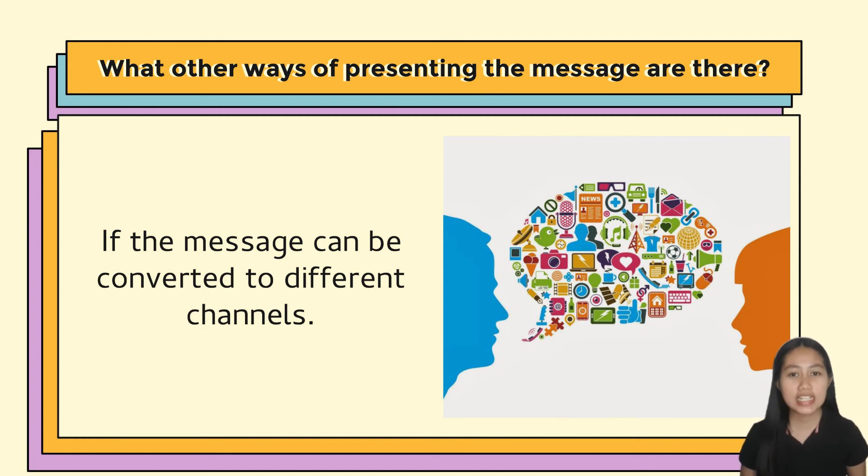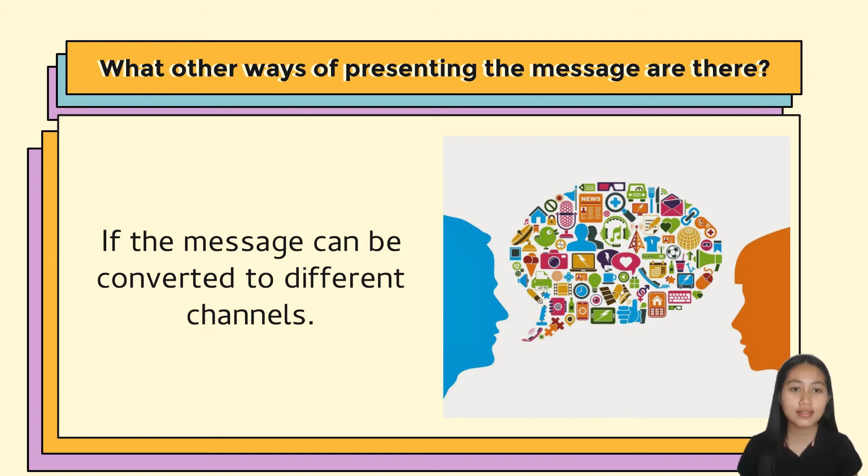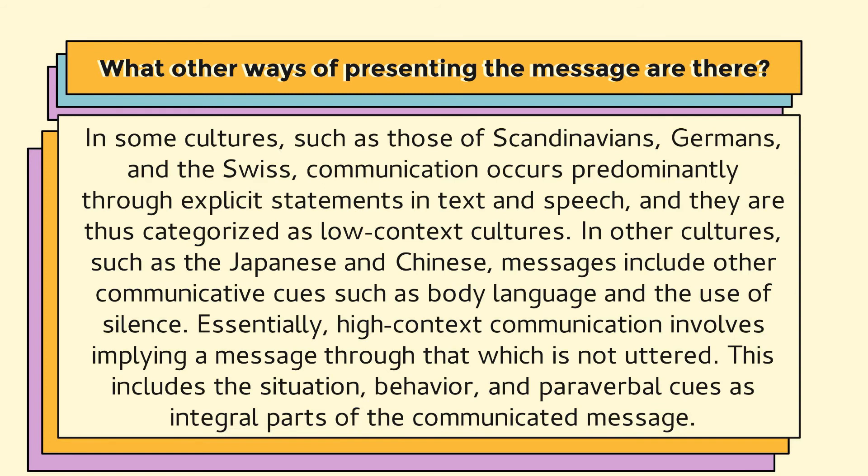Lastly, what are other ways of presenting the message? A message can be translated into other languages. In some cultures, such as those of Scandinavians, Germans, and the Swiss, communication occurs predominantly through explicit statements in text and speech — these are categorized as low-context cultures. In other cultures, such as the Japanese and Chinese, messages include other communicative cues such as body language and the use of silence. High-context communication involves implying a message through that which is not uttered, including the situation, behavior, and paraverbal cues as integral parts of the communicated message.